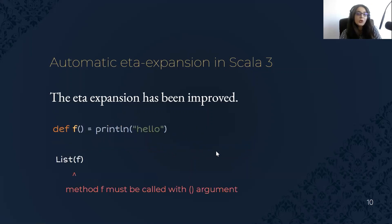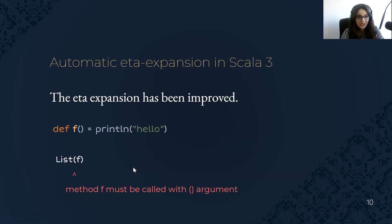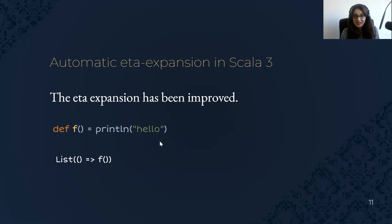We should note that a method with an empty argument list will not automatically be converted to a function, so we need to do this explicitly. But this is an improvement in Scala 3 — we are able to automatically convert our methods into functions and treat them as values, which is great.